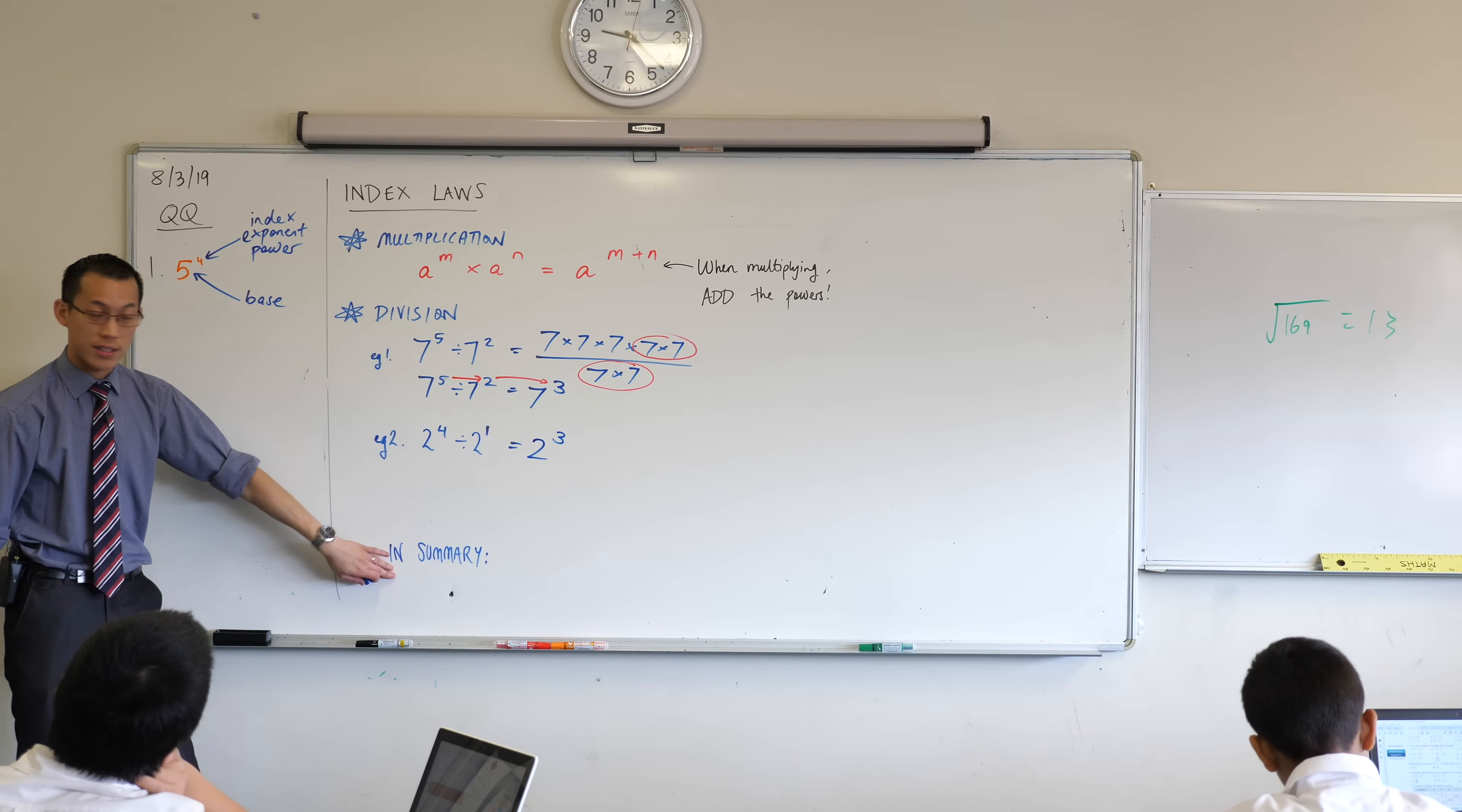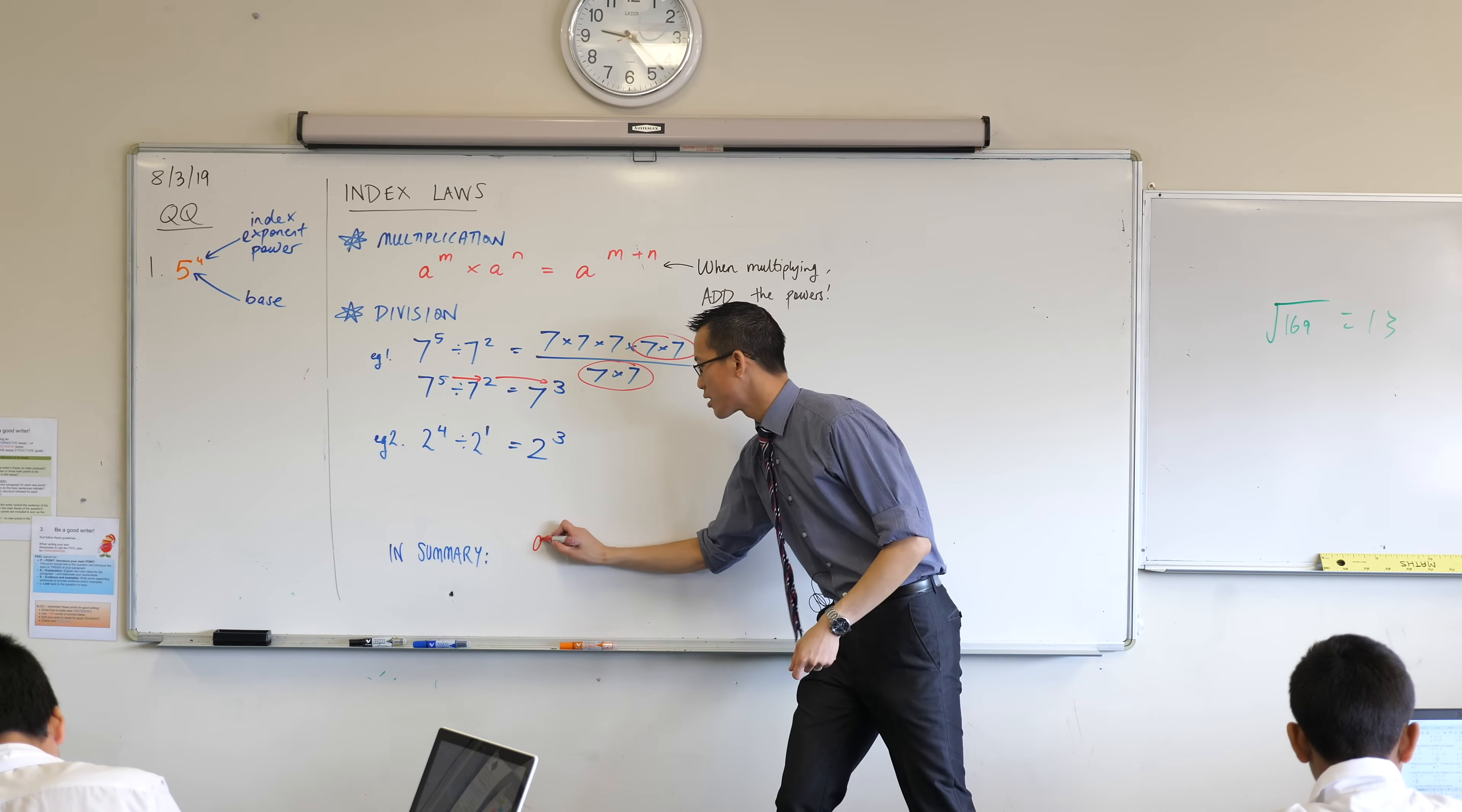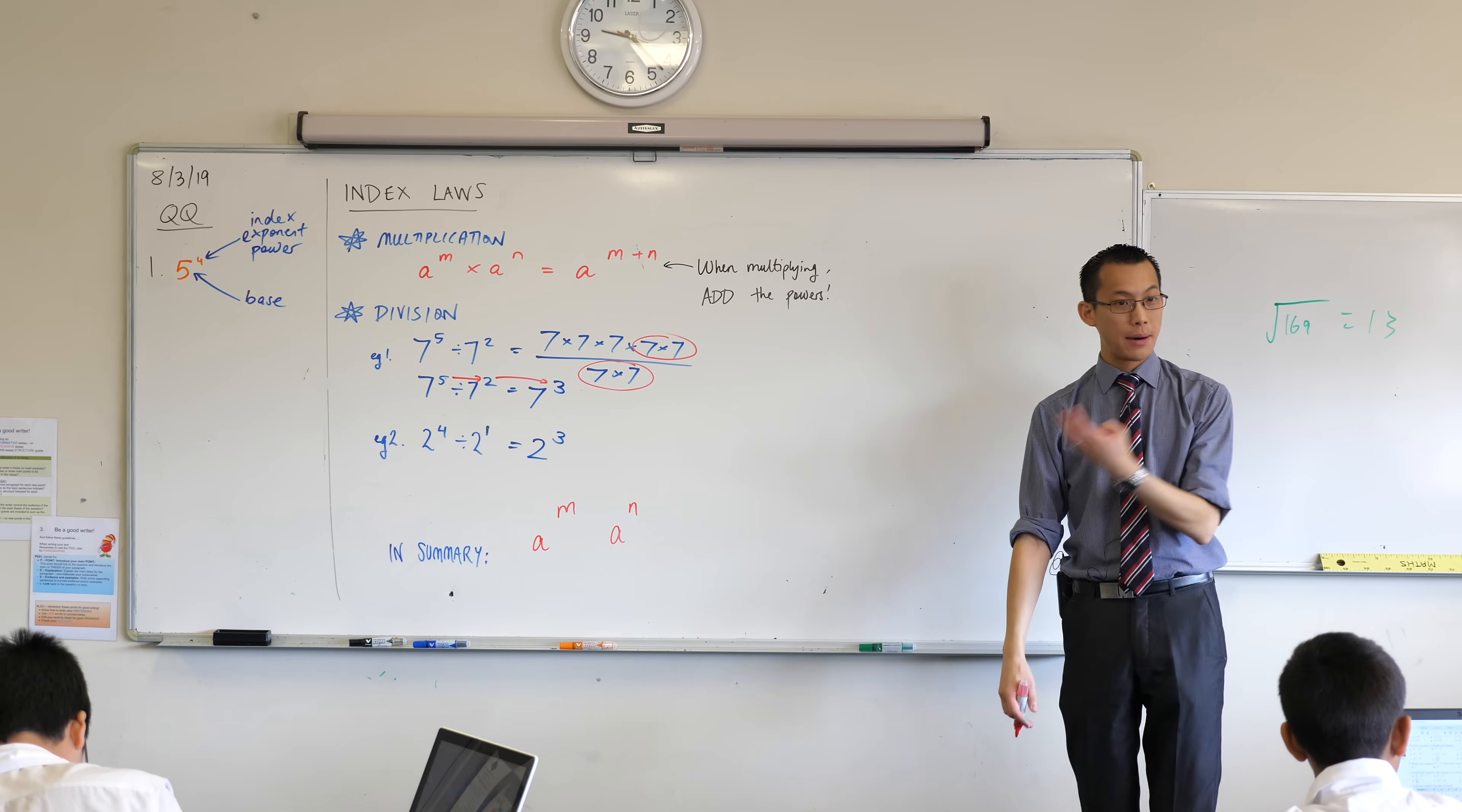So now we can summarize, and it's going to look very similar to this one that we wrote up here, right? If you've got two numbers and they have the same base, right, so if you've got a to the power of m and a to the power of n again—so same base, different powers—but if instead you're dividing,